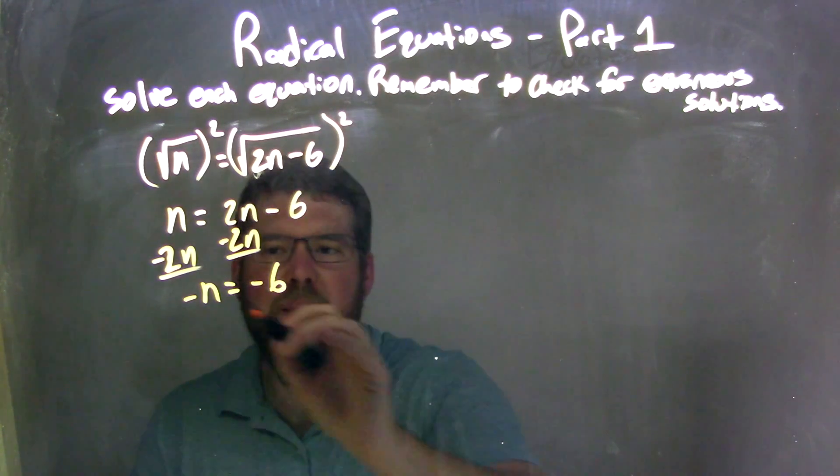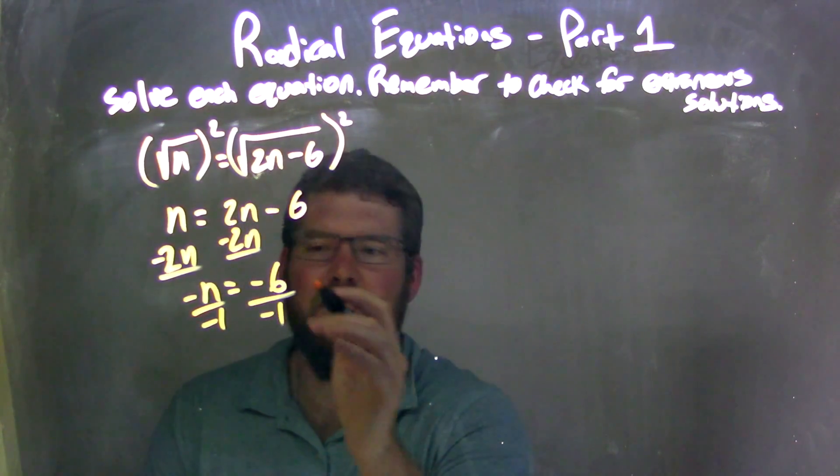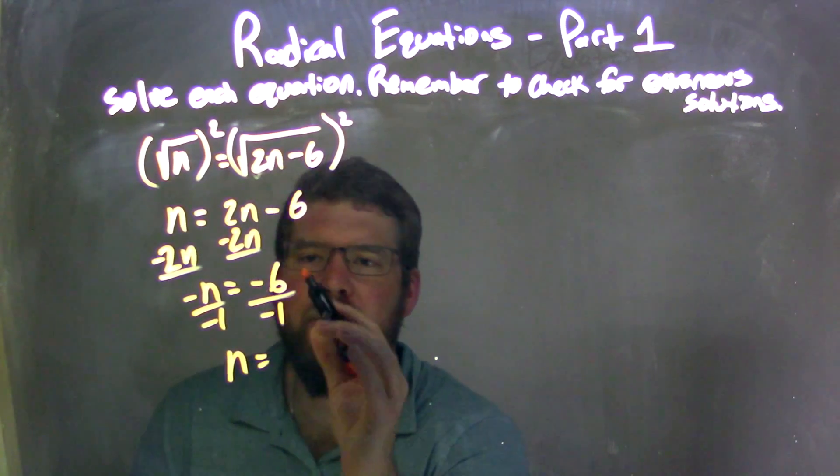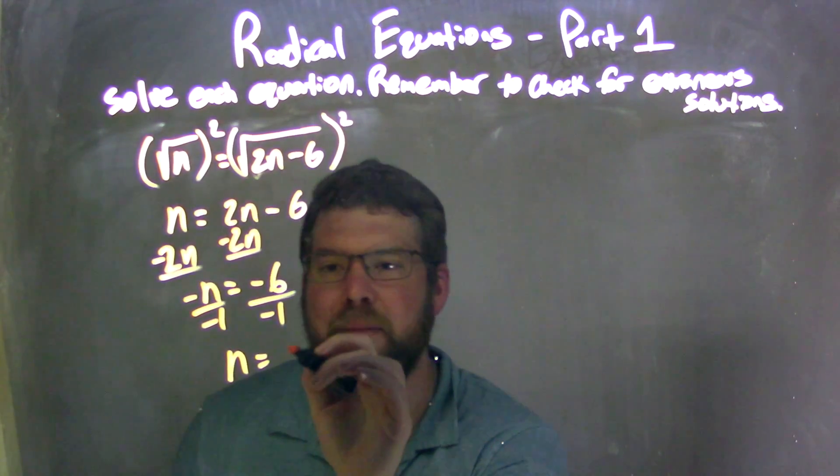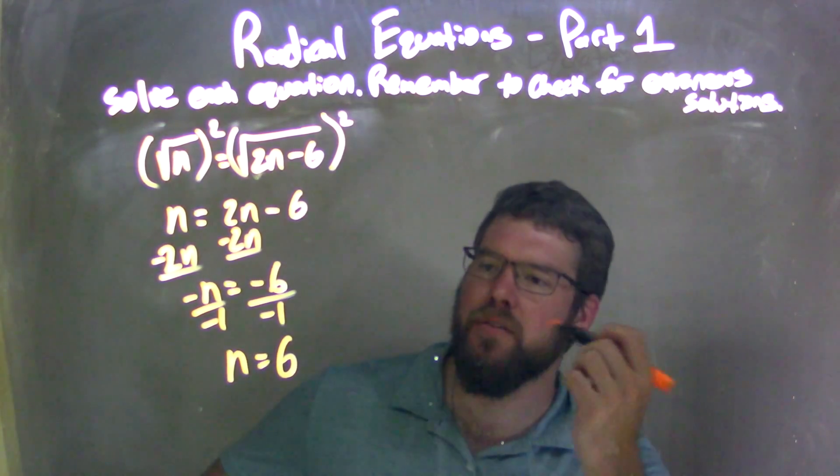And then I'm going to divide by negative 1, essentially just bringing the negative over, leaving me with n equals negative 6 divided by negative 1 is a positive 6. So we have n equals positive 6 here.